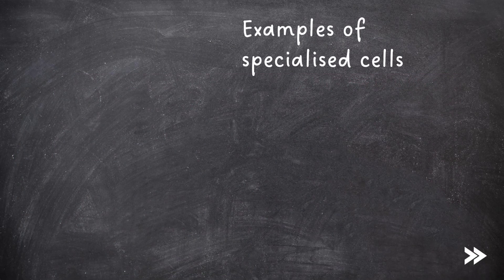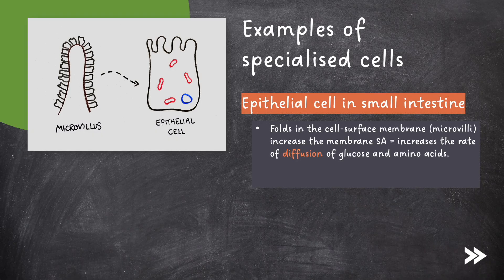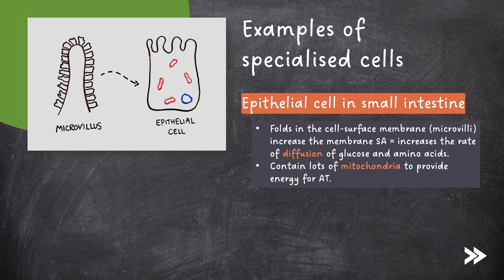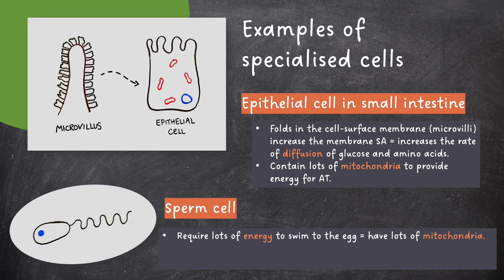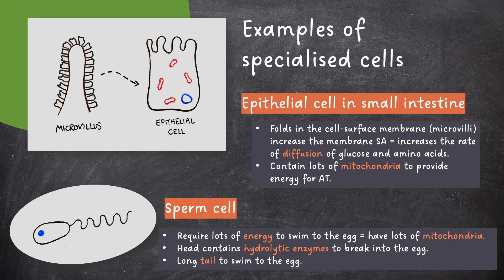Let's have a look at some examples of specialized cells, starting with epithelial cells of the small intestine. Folds in their cell surface membrane, called microvilli, increase the membrane surface area, which increases the rate of diffusion of products of digestion such as glucose and amino acids. They also contain lots of mitochondria to provide energy for active transport of these substances. Then we have sperm cells — these need lots of energy to swim to the egg, and therefore have lots of mitochondria. The head contains hydrolytic enzymes to break into the egg, and a sperm cell also has a long tail to swim to the egg.